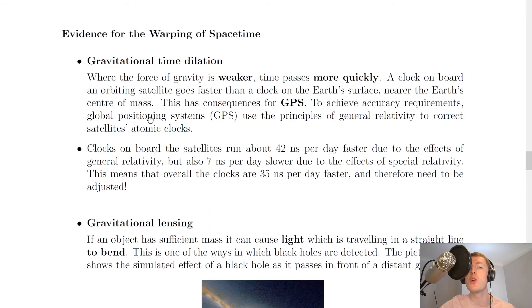To achieve accuracy requirements, global positioning systems, GPS, use the principles of general relativity to correct satellites' atomic clocks. Clocks on board the satellites run about 42 nanoseconds per day faster due to the effects of general relativity, but also 7 nanoseconds per day slower due to the effects of special relativity. This means that overall the clocks are 35 nanoseconds per day faster, and therefore need to be adjusted. So you might remember that at higher level we said that we need to correct for the effects of time dilation for satellites, and this is why.